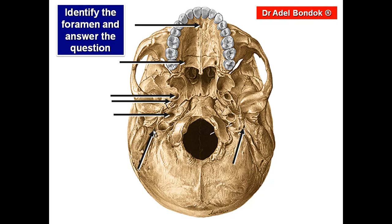This foramen, between the mastoid process and the styloid process, is the stylomastoid foramen. It transmits the facial nerve and the stylomastoid artery, which is a branch from the posterior auricular artery.